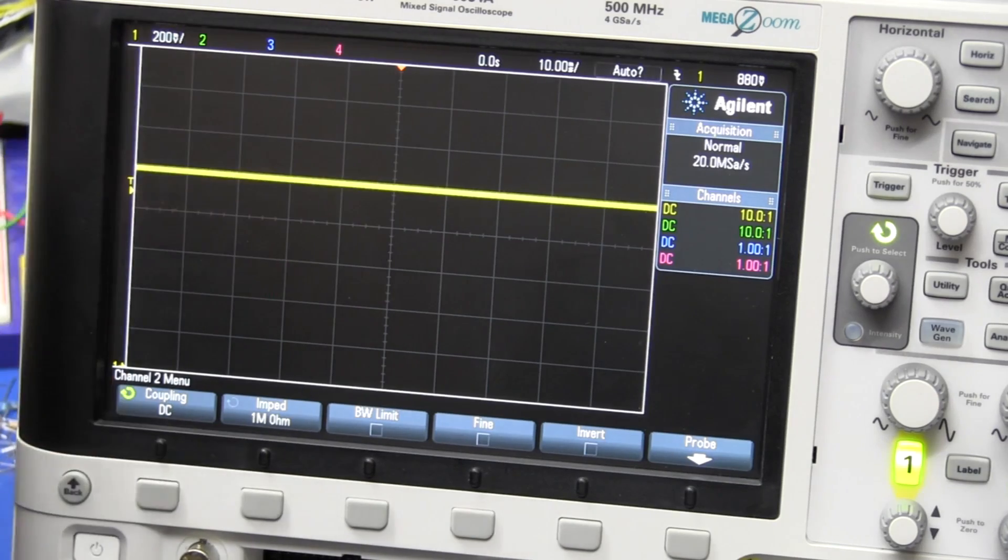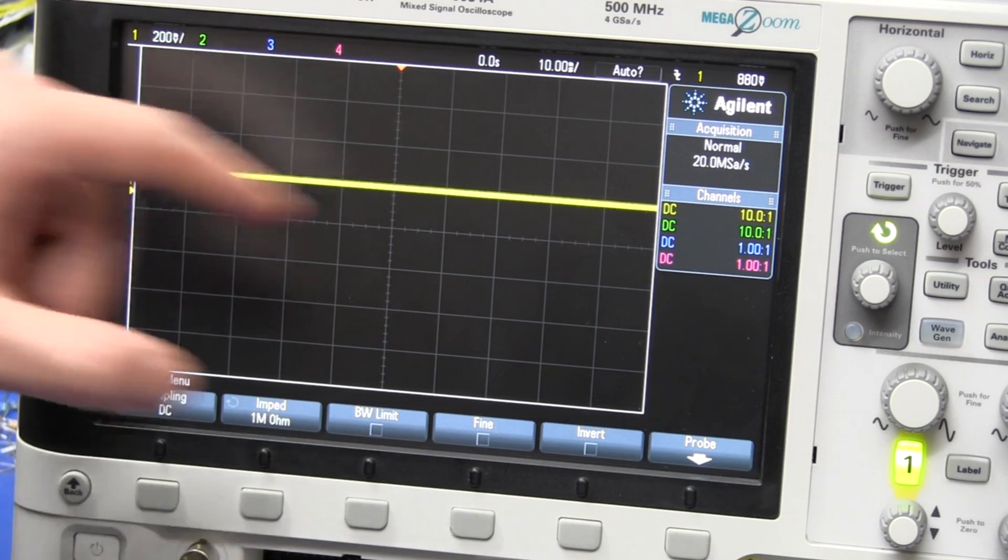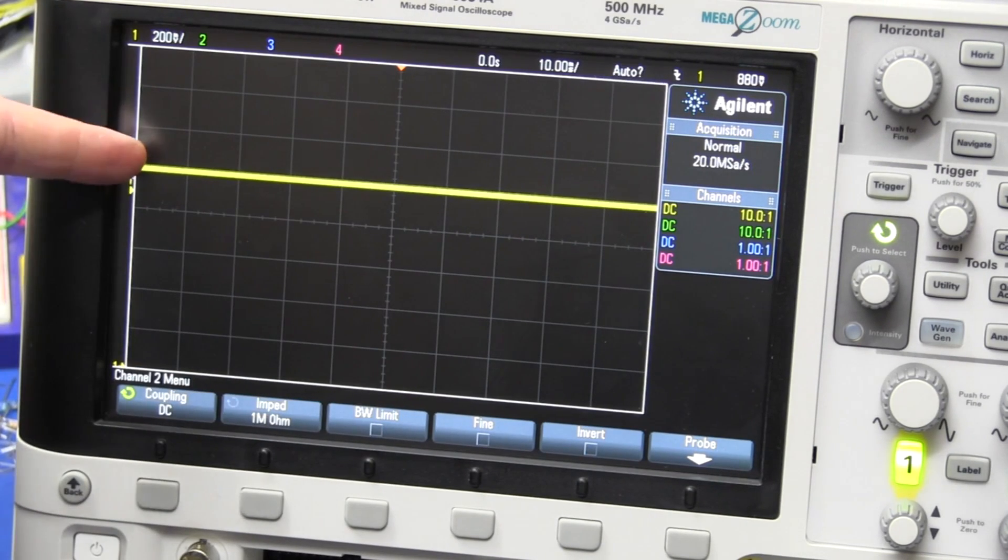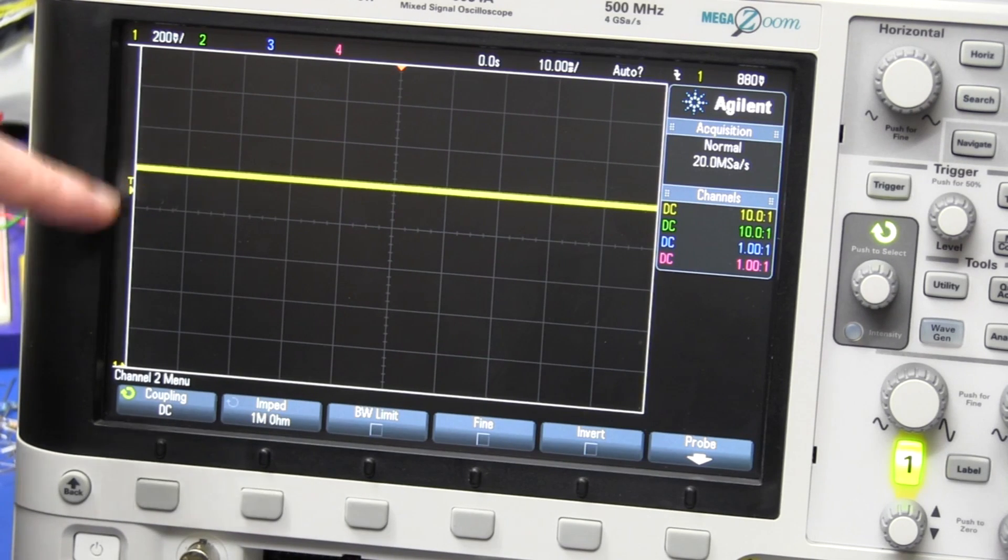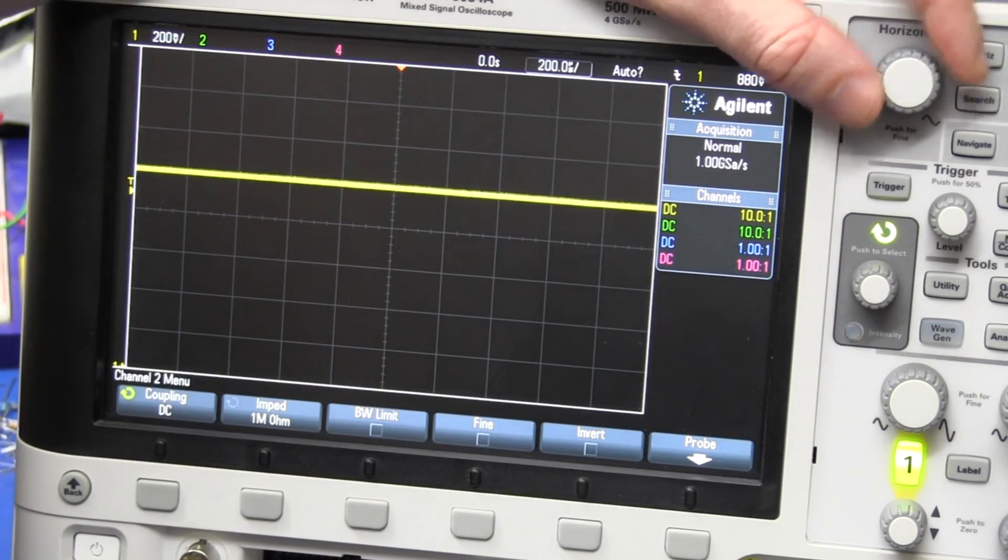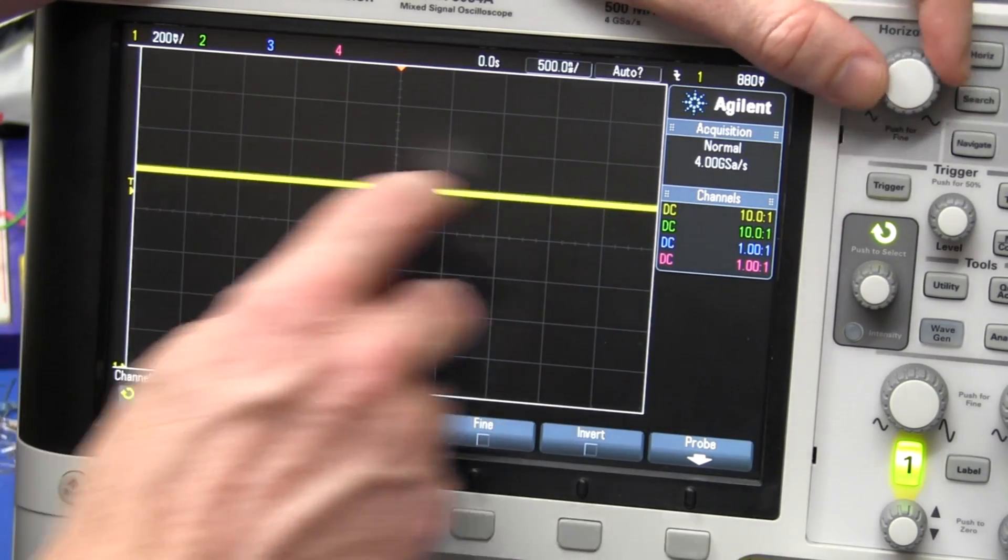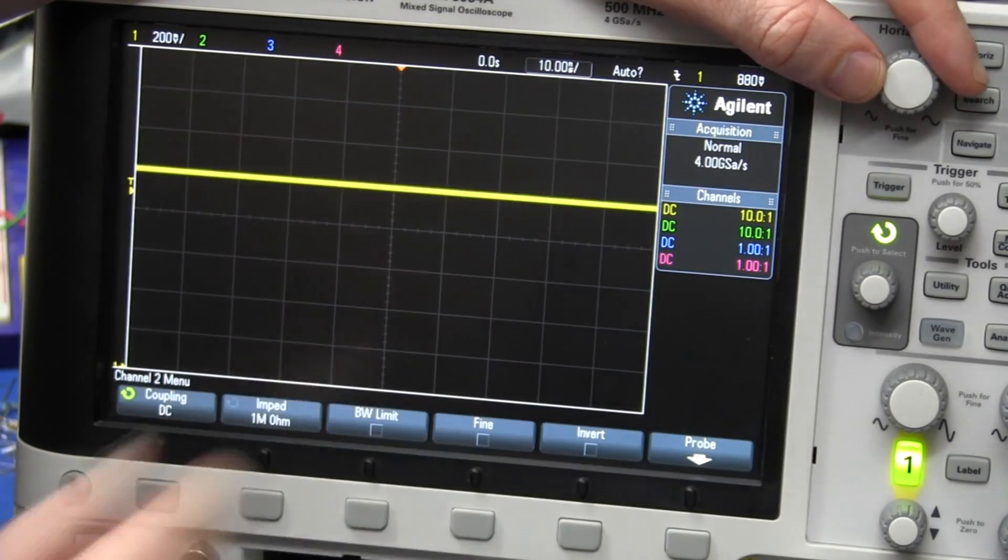Now, I'll show you an example of where the high res mode can be useful and clean up your signal, just measuring the DC output of a 1 volt power supply here, so we've got a volt output there.